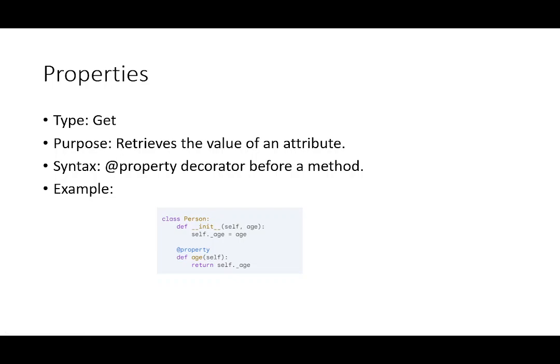The next thing we need to talk about for coding conventions, especially when we're extending Python, is properties. There are three different types: get, set, and delete. The most common ones you'll probably use are get and set. Here we have a getter. We have a class Person with our initializer for age, and we're going to return the age back. The purpose of the getter is to retrieve a variable or an attribute. The syntax is the @property decorator on the method. Here's the example: @property, def age(self), return age.